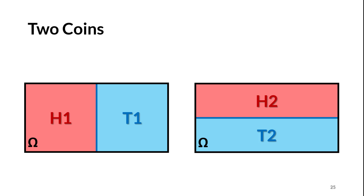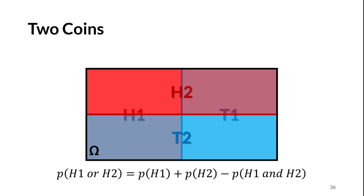Let's extend our coin flip example to the flip of two fair coins. The figure on the left represents outcomes from the first coin, and the figure on the right represents outcomes from the second coin. Both coins are fair Bernoulli random variables. We draw the diagram differently so we can look at what happens when we combine the two. Overlaying them, we see four distinct regions, because in two coin flips there are four outcomes. By flipping two coins, we've gone from a Bernoulli random variable to a discrete random variable for our outcomes.